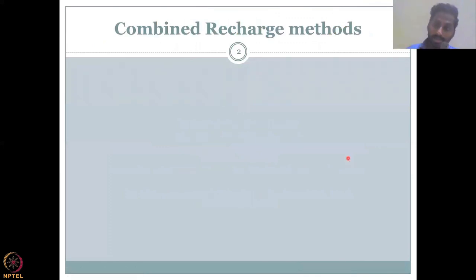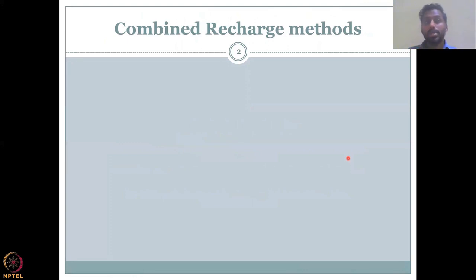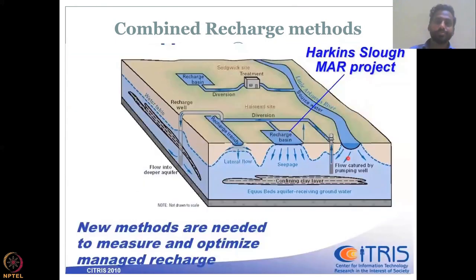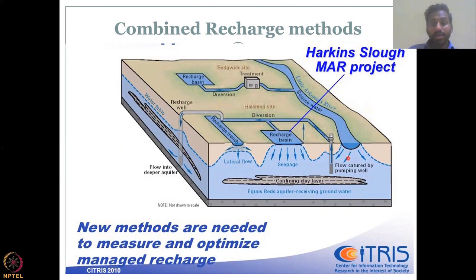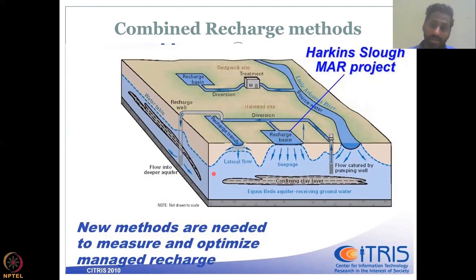In the previous lectures, we looked at the indirect method and direct method. The direct methods involved capturing surface runoff and then putting it into the groundwater recharge units, whereas the indirect method is to push water into the groundwater aquifer unit. Here, we'll be looking at combined recharge methods. If you look at this piece of land where a lot of water is coming, it has been treated and put into recharge basins, which is part of a direct method, and there is also a recharge-induced well pushing the water in.